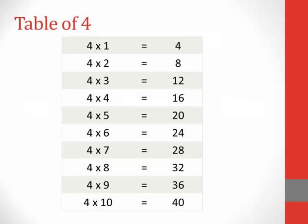Table of 4. 4 1s are 4, 4 2s are 8, 4 3s are 12, 4 4s are 16, 4 5s are 20, 4 6s are 24, 4 7s are 28, 4 8s are 32, 4 9s are 36, 4 10s are 40.